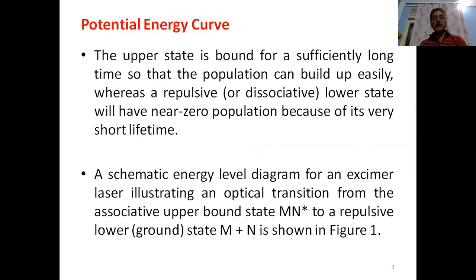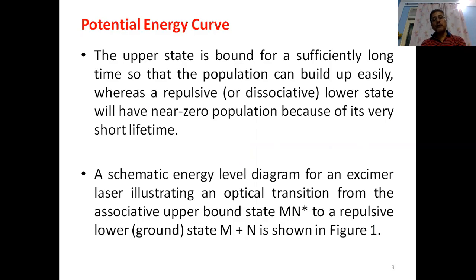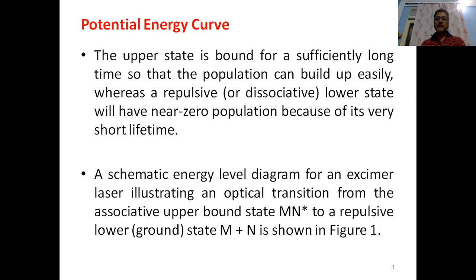We have seen a schematic energy level diagram for an excimer laser illustrating an optical transition from the associative upper bound state MN* to a repulsive lower state M plus N. M plus M gives M2 — the excited dimer — while M plus N gives MN — the excited complex.